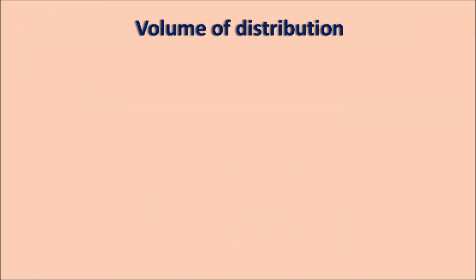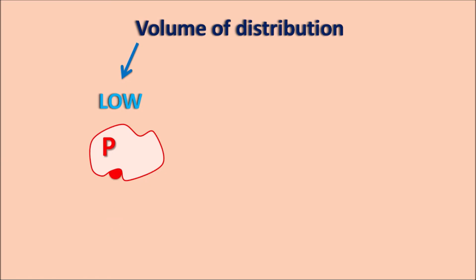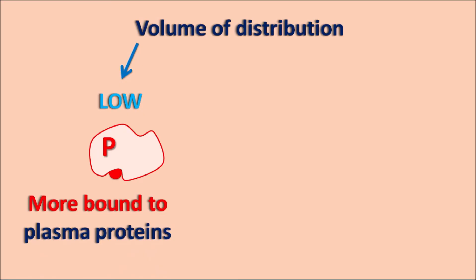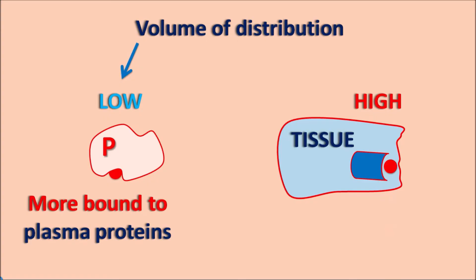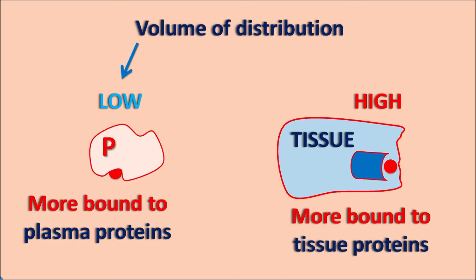This is another important point of difference between plasma protein binding and tissue protein binding. Now we can see another difference at the volume of distribution. A low value of the volume of distribution indicates that the drug is going to be confined within the plasma, so the drug will have more affinity towards the plasma proteins. A low volume of distribution indicates that the drug is more bound to the plasma proteins. Similarly, high volume of distribution indicates that the drug has high affinity towards the tissue proteins. When the drug binds to the tissue proteins, it is not present in the plasma, so it is more distributed into the extravascular tissues, resulting in a high volume of distribution. So a high VD value indicates that the drug is more bound to the tissue proteins.